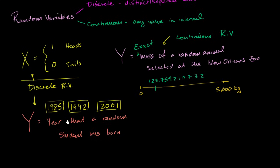You can actually have an infinite potential number of values, as long as the values are countable — as long as you can literally say this is the first value, the second, the third, and you might be counting forever. But as long as you can list the values it could take on — even an infinite list — then you're dealing with a discrete random variable.